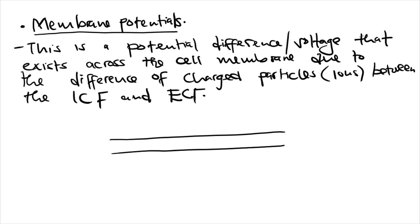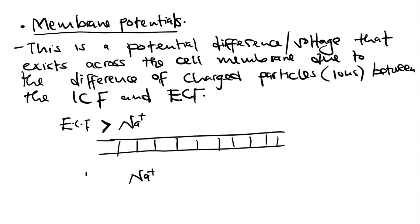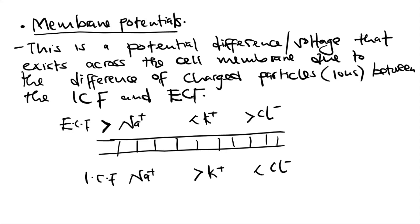If this is the cell membrane, you find that sodium is more concentrated outside the cell (ECF) than inside (ICF). There is less potassium outside and greater potassium inside the cell. There is more chloride outside and less chloride inside the cell.